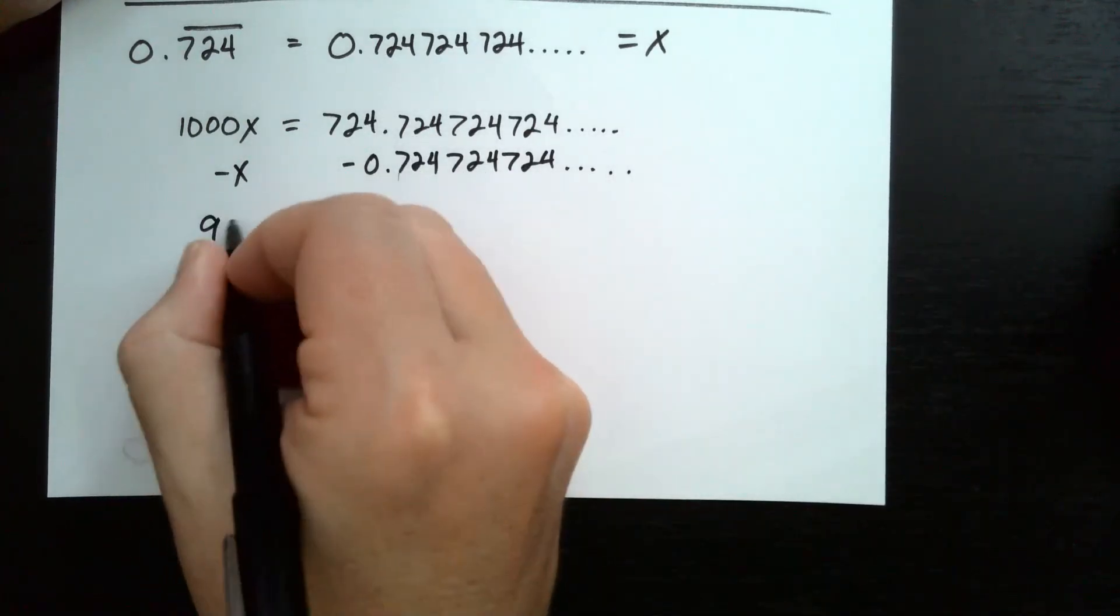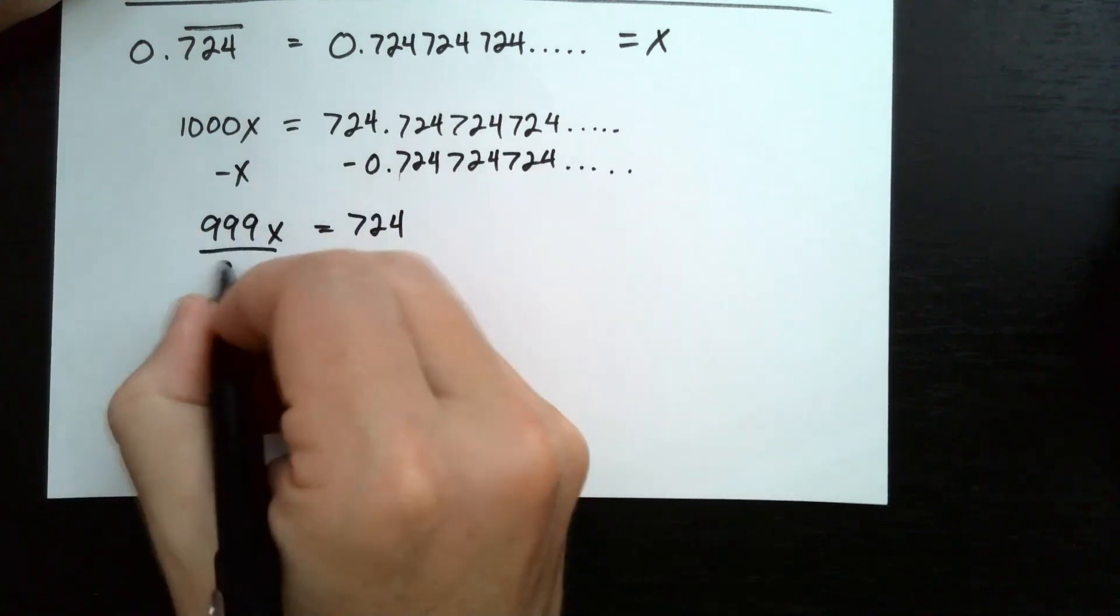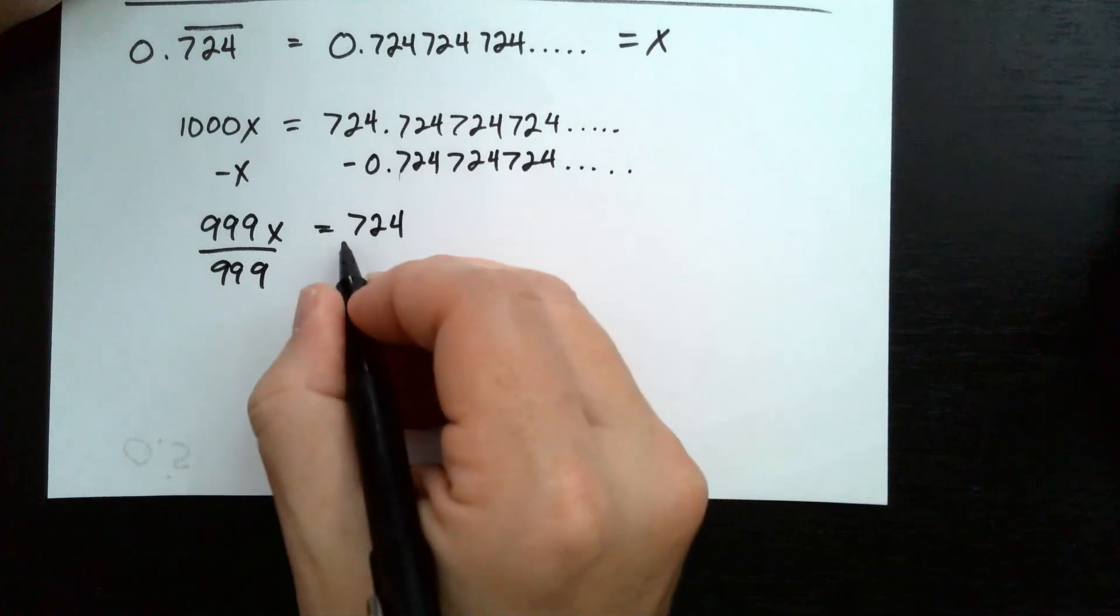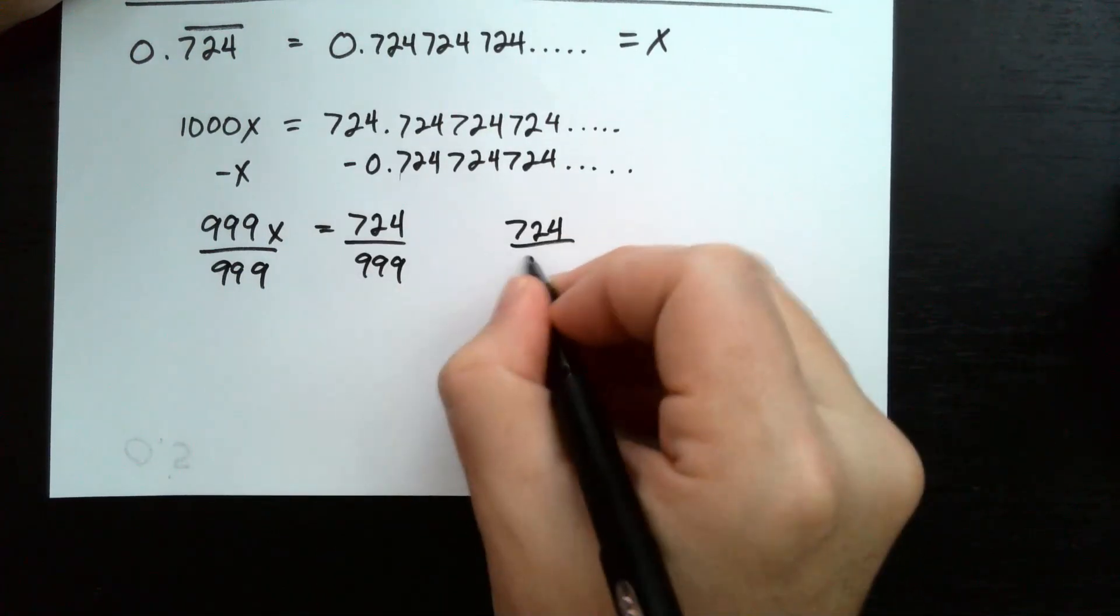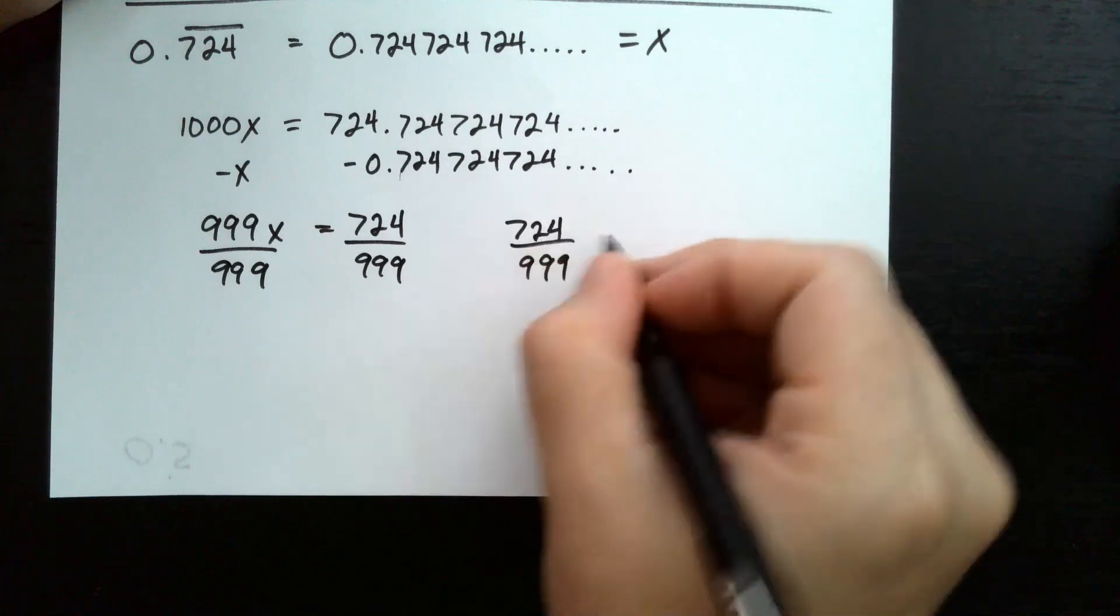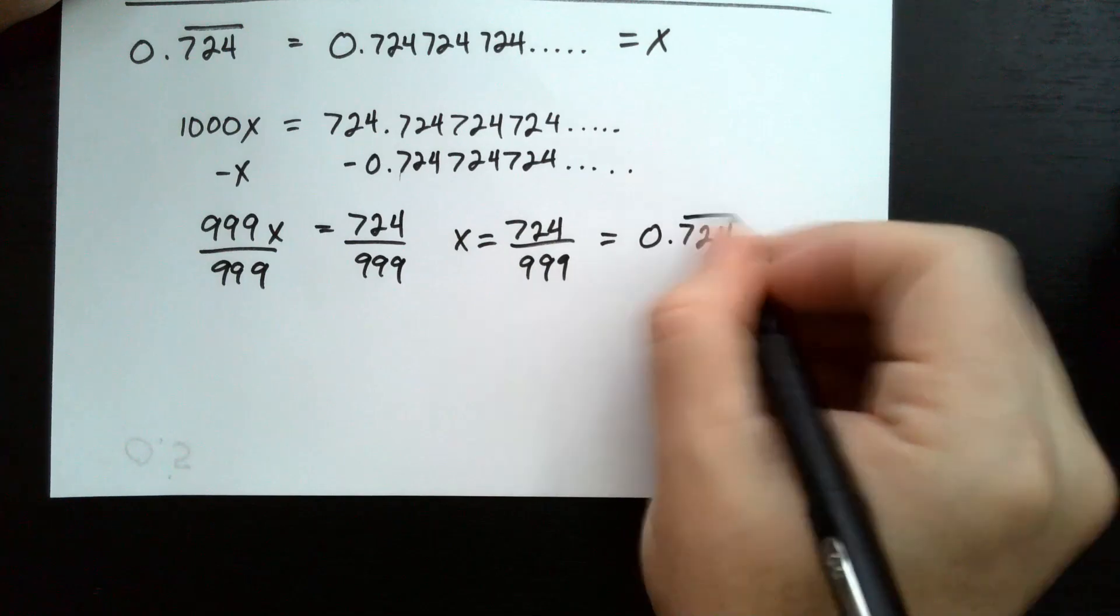And on the left, we get 999x is equal to 724. If I divide by 999, I get 724 over 999 is equal to x, which is equal to 0.724 repeating.